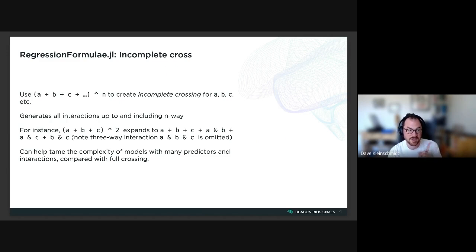But it notably does not include the three-way interaction a:b:c that you would get if you did the full cross a * b * c. And the advantage of this is that it helps tame the complexity of models that have many predictors and many different interactions when you compare it with full crossing. As you add more predictors, the number of interactions with a full crossing design grows very quickly.